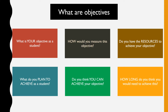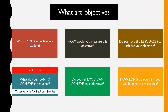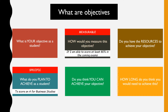Your objective needs to be specific. When you say what do you plan to achieve as a student, a specific example would be: to score an A for business studies. And how would you measure this objective? Your objective needs to be measurable — how to quantify or know when you are achieving it. For example, you could say: if I'm able to score at least 80% in the coming exams, that's how I would achieve an A.